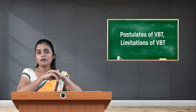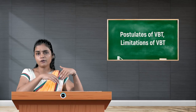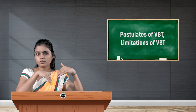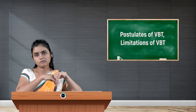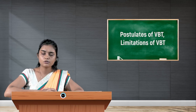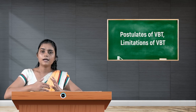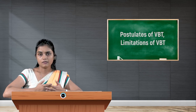The final important limitation is that VBT does not satisfactorily explain why some complexes of a metal ion in a particular oxidation state are low spin while other complexes of the same metal ion in the same oxidation state are high spin. For example, a metal ion in the same oxidation state may form a low spin complex in one case and a high spin complex in another, and that is not explained satisfactorily by VBT. This concludes the discussion of postulates and limitations of VBT. In my upcoming videos, I will discuss CFT in detail. Thank you.